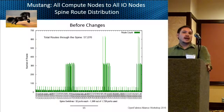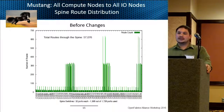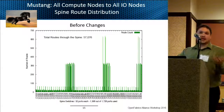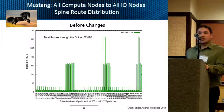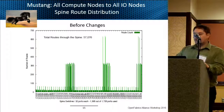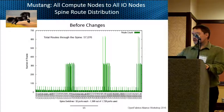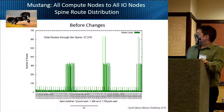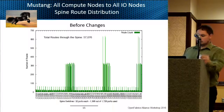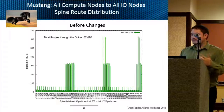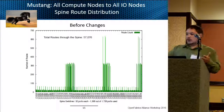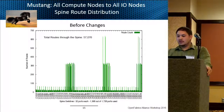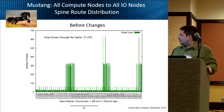We went ahead and started looking at some other clusters now. Wolf was our main cluster since it was IB-connected to the Lustre fabric. We then looked at other clusters that were Ethernet-connected using LNET routers to get to the Lustre fabric. This is the Mustang cluster — another open science cluster at LANL. The Mustang fabric is made up of three core chassis switches broken out into many different leaf switches to make the fat tree fabric for that cluster. Before any changes, we saw that same imbalance between compute-to-IO-node routes, with routes concentrated on only a handful of spine ports.